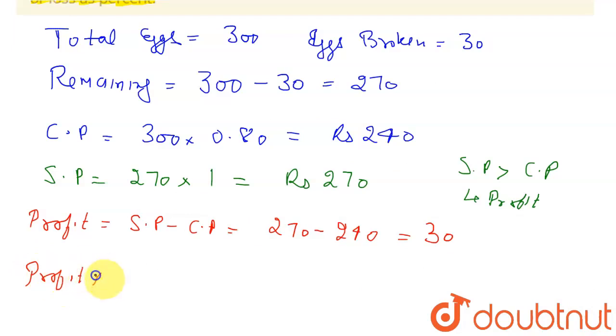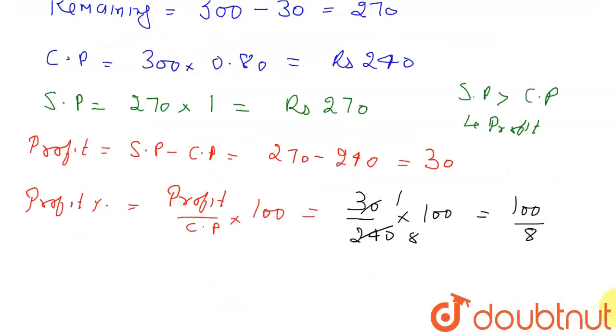Profit percentage is equal to profit divided by CP into 100, which will be equal to 30 upon CP is 240 into 100, which will be equal to 100 by 8, which will be equal to 12.5 percent. So that will be our answer, 12.5 percent profit.